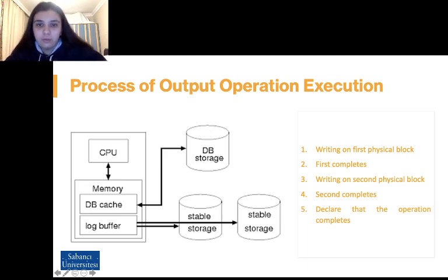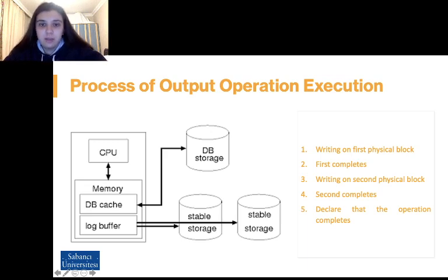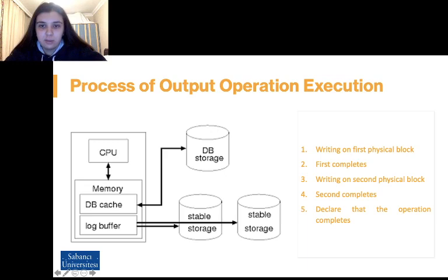During recovery from failure, each of the physical blocks is examined. If both are the same and no detectable error exists, then no further action is necessary. If one block contains a detectable error, then we replace its content with the value of the other block. If neither block contains a detectable error but the blocks differ in content, then we replace the content of the first block with the content of the second block.